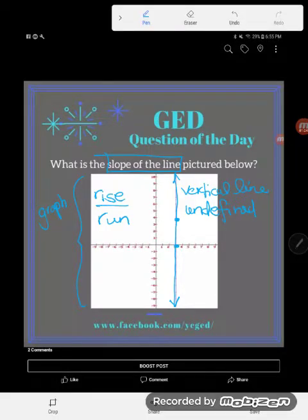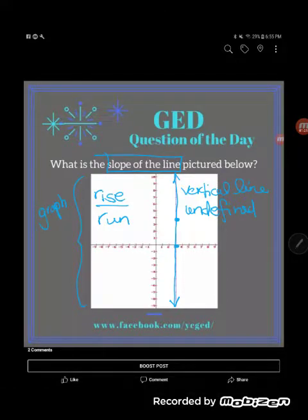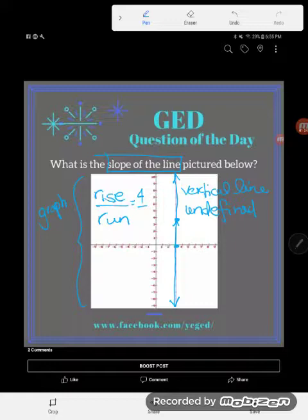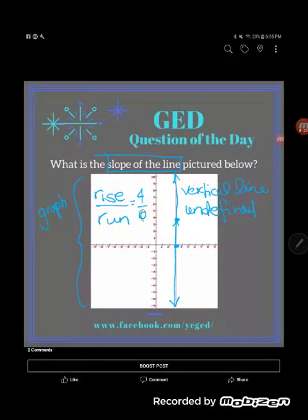Now how much did I rise on this particular line? Well, I start from this point to that point. I started at zero and I rose up to four, and so my rise is four. But take a look at how much I ran. How much did I run? How much did I move left or right? Well you can see I didn't move left or right at all. I actually ran zero.